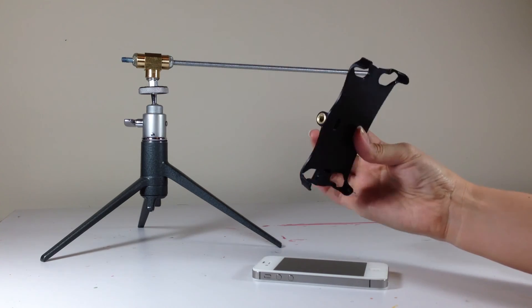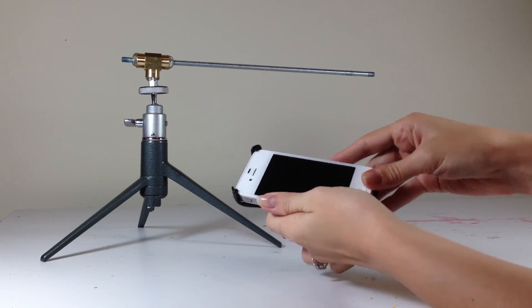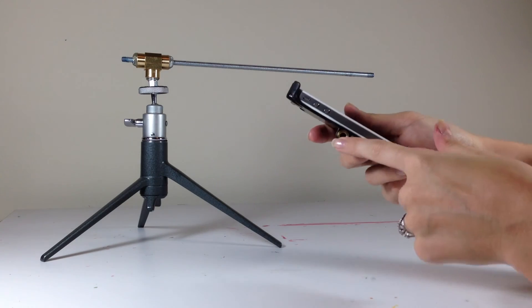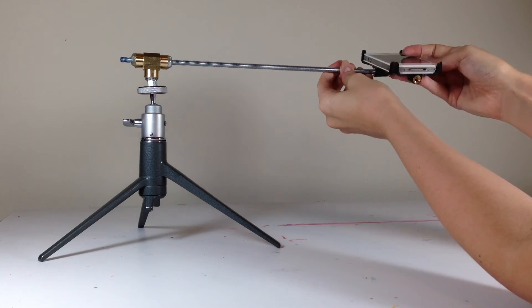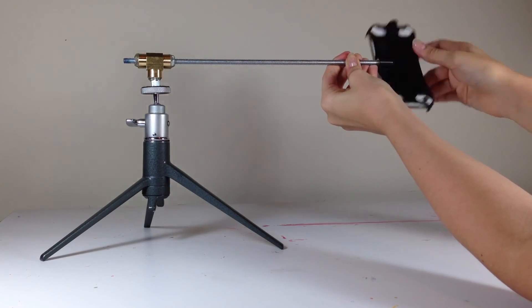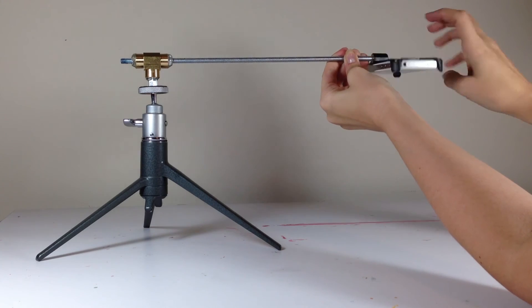And then you want to take your phone adapter and go ahead and snap your phone in like that. And then screw this end onto the rod. You want to make sure this is on there tight so that it doesn't move around while you're doing your videos or photos.